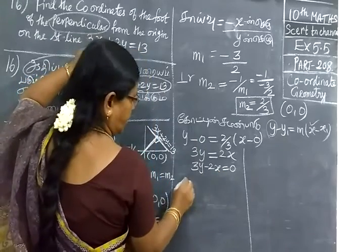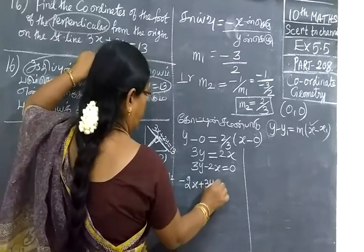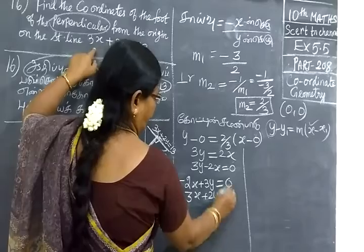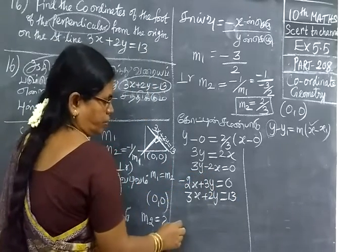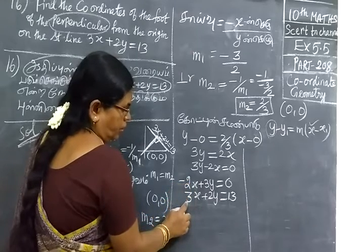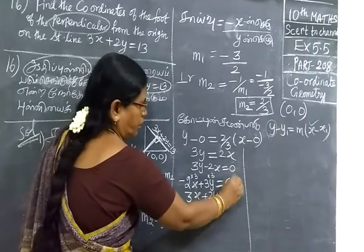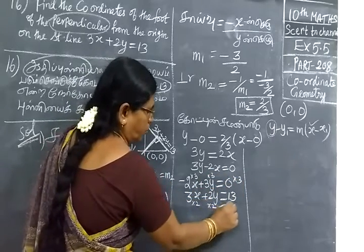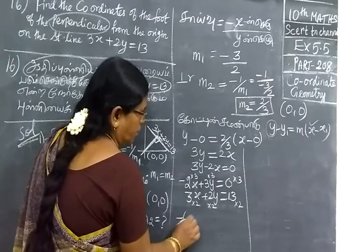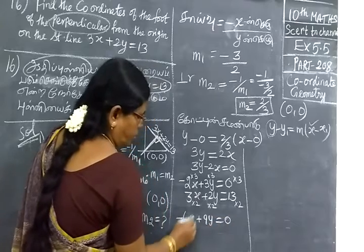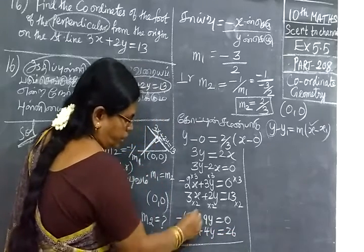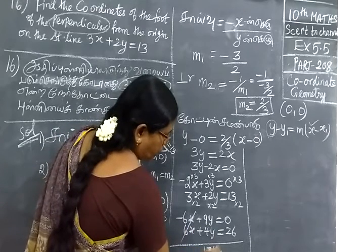The equation is 3x plus 2y equals 13. The method is easy to write. So minus 6x plus 9y equals 0. Then 6x plus 4y equals 26. Cancel it. So 13y sum is 26.